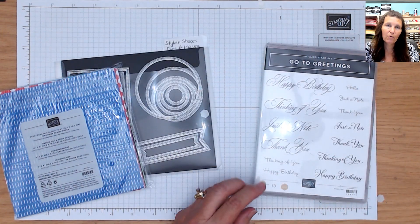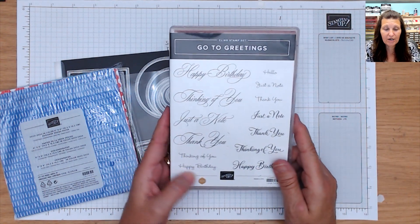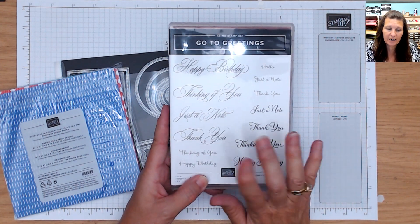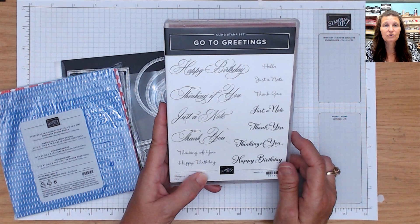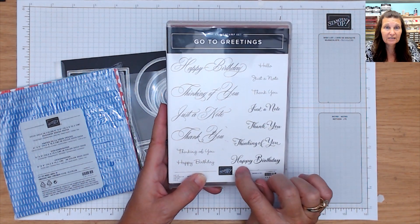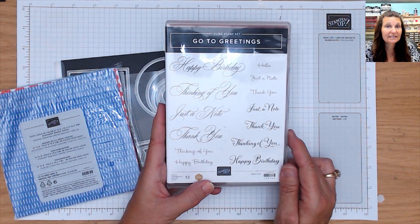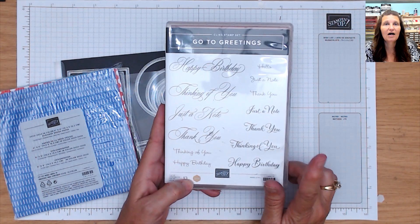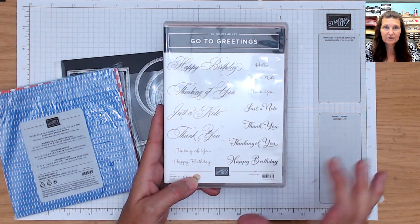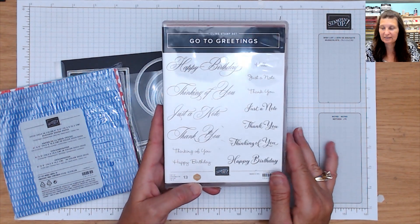I kind of paired one of the cards with the Go To Greetings. One of the cards I used the Hello Ladybug bundle, and one I used the Go To Greetings because I wanted a birthday card. So I love the Go To Greetings. This is a staple in my stamp room because it has various fonts, various sentiments, and various shapes and sizes of the sentiments. So it's a winner. It fits any type of matte or sentiment tag that you're going to be stamping on.